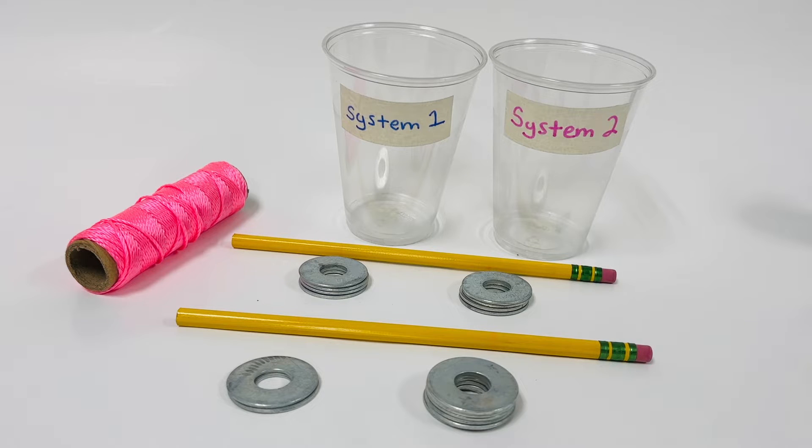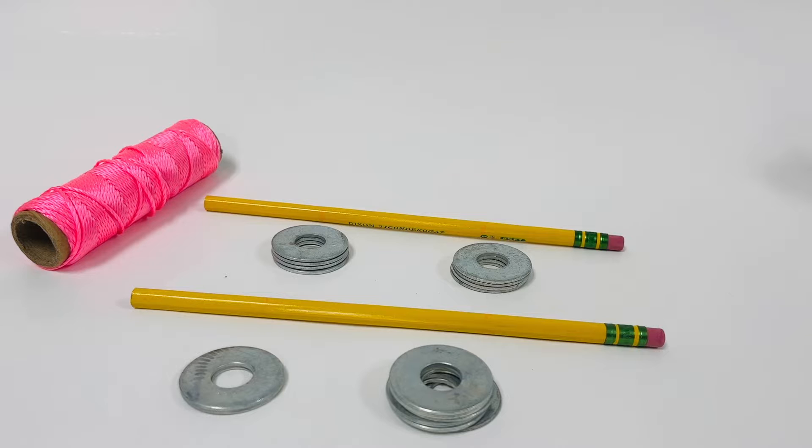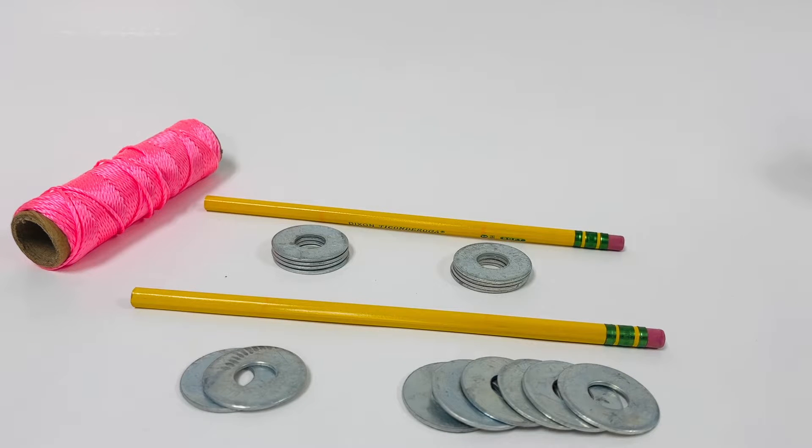This is the washer heat flow lab where the objective is to see how mass affects heat flow. We're going to set up two different experiments. The first one uses two and six washers, and the second one uses four washers for both systems.